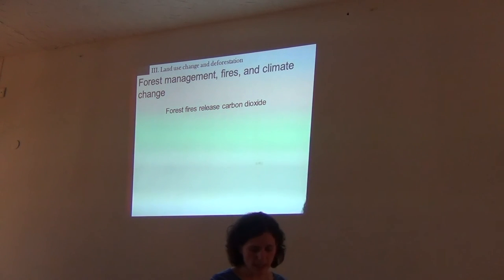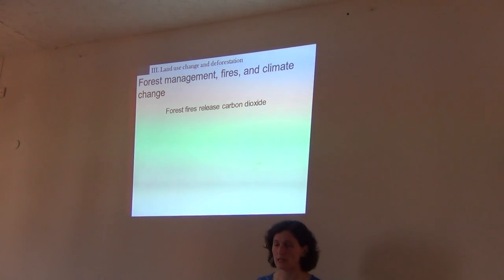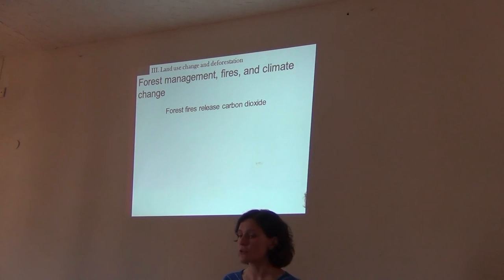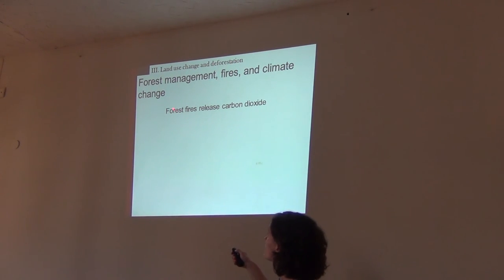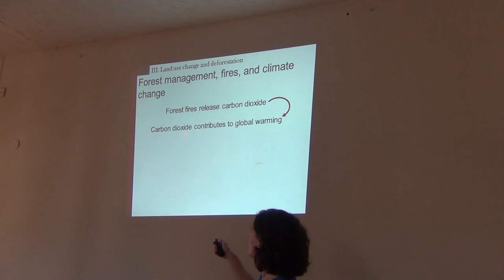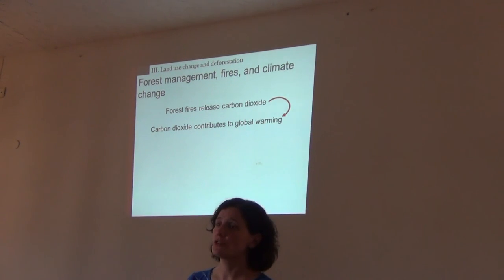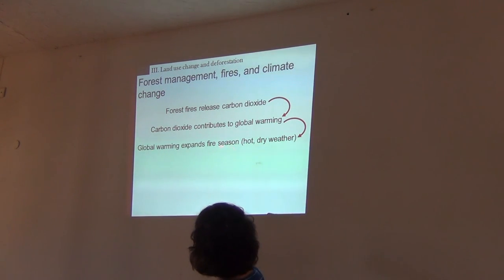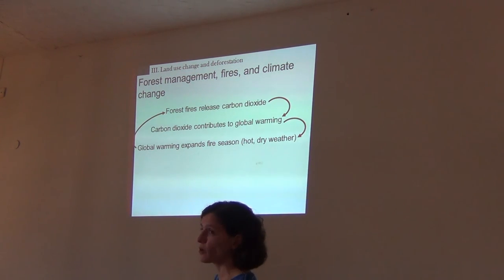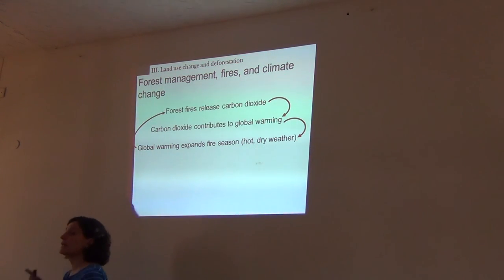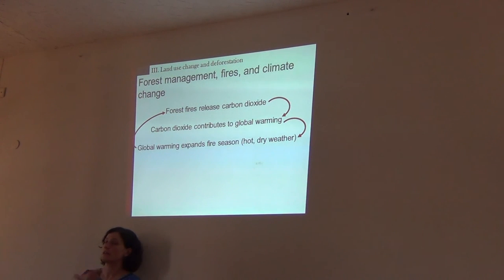These processes are highly interconnected and affect each other in a cycle: we have fires, we have release of CO2, CO2 contributes to global warming, and global warming generates drier and hotter conditions — which leads to more fires. This feedback loop is a major concern when thinking about the combined effects of logging, deforestation, and climate change.